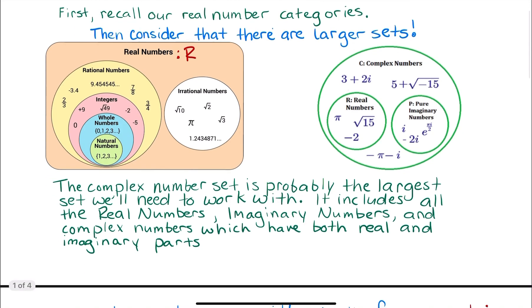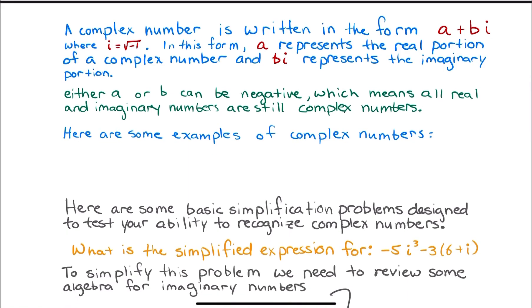A complex number is typically written in the form a plus bi. You'll see that right here, a plus bi, where i is going to be equal to, and it's defined by, the square root of negative 1. So in this form, a represents the real portion of a complex number, and bi represents the imaginary portion. Now, either a or b can be negative, which means that all just real numbers, and then also all the only imaginary numbers, can still be considered complex numbers.